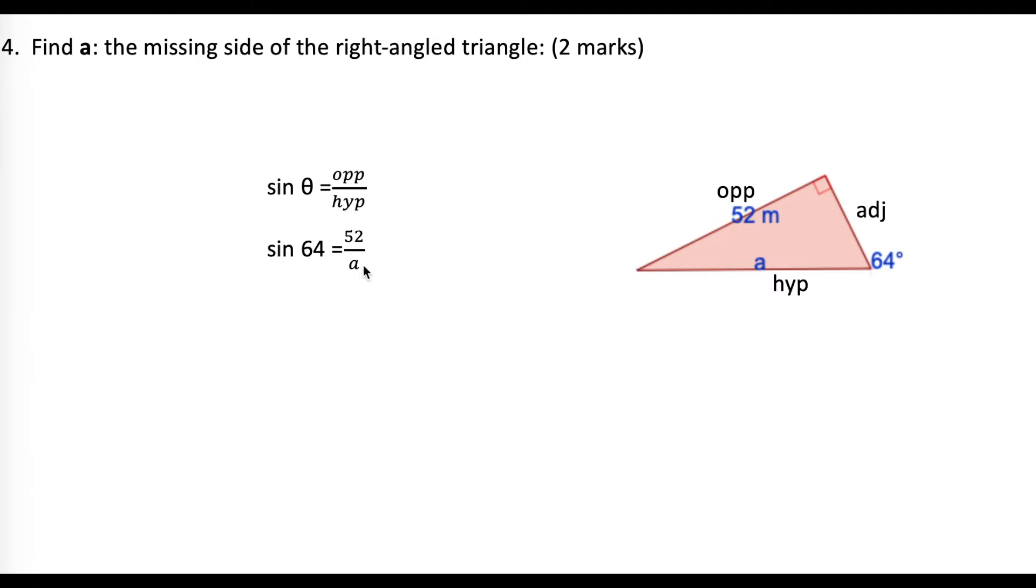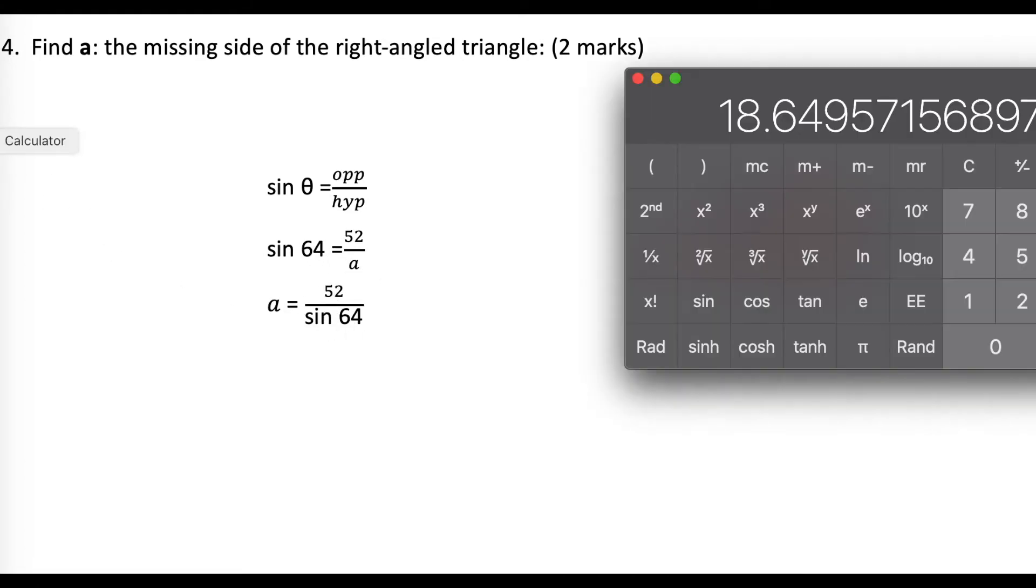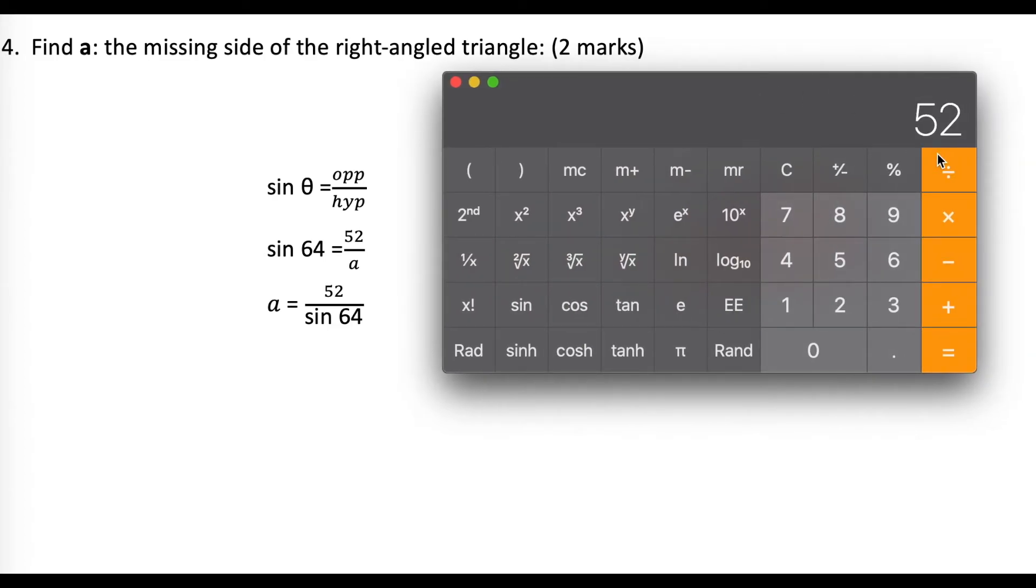I'm going to switch the A and the sine of 64 and replace each other. We have A equals 52 over the sine of 64. 52 divided by the sine of 64 gives us 57.855300.